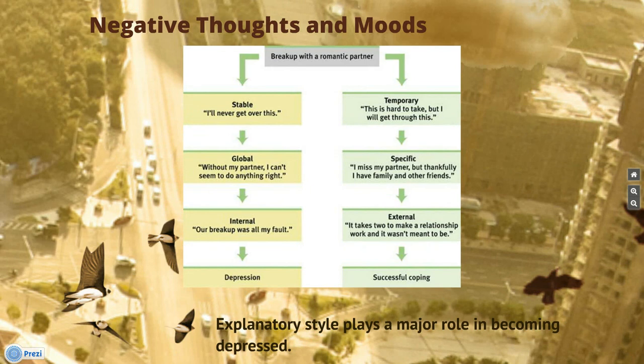Let's take a breakup with a romantic partner as an example. On the left is the depression outcome, on the right is the successful coping outcome. For depression: stable — 'I'll never get over this'; global — 'without my partner, I can't seem to do anything right'; internal — 'our breakup was all my fault', which leads to depression. In a healthier person it would go as follows: temporary — 'this is hard to take, but I will get through this'; specific — 'I miss my partner, but thankfully I have my family and friends'; external — 'it takes two to make a relationship work and it wasn't meant to be', which leads to successful coping.